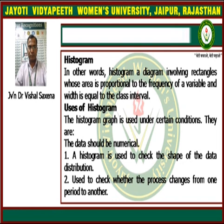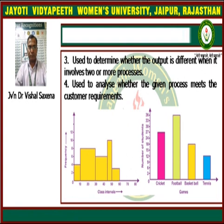Third, the histogram is used to determine whether the output is different when the process involves two or more processes. Sometimes we can see that our distribution has two or more different processes. If our frequency distribution or method has two or more different processes, then the histogram can be used to determine whether the output is different. This is a very important application for two or more processes.